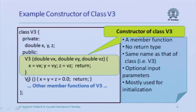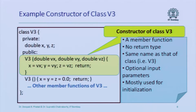Here is the class V3, and I am writing a constructor member function of class V3. The funny thing is that the name of this constructor member function is the same as the name of the class. C++ requires that all constructor functions of a class must have the same name as the class, and they do not have any return type. These are the two quirky things: the name of the member function is the same as the name of the class, and it does not have any return type. It can take parameters just like any other member function.